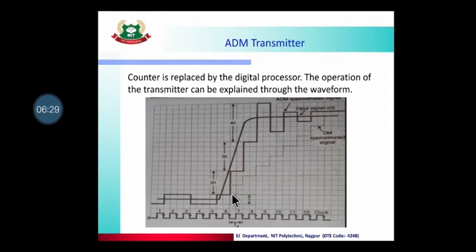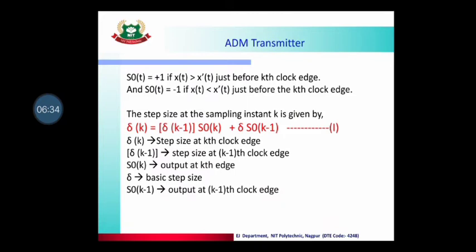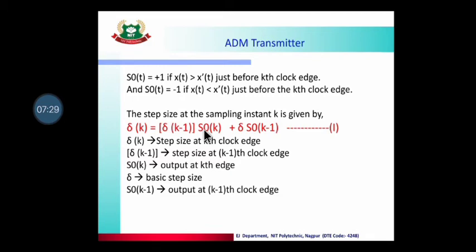Now let's look at the formula for calculating step size. How to calculate delta_k — meaning the step size at any given instant or clock location. For example, what is the step size at the 6th clock? The formula involves delta_(k-1), S0_(k-1), and S0_(k-2), where S0 represents the comparator output signal indicating whether the original signal is larger or smaller than the approximated signal.